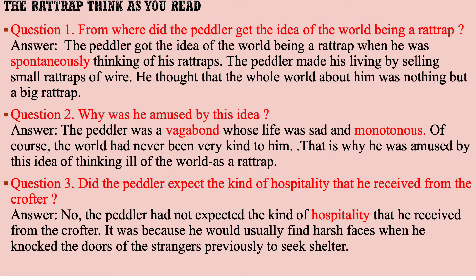Question number two: Why was he amused by this idea? Answer: The peddler was a vagabond whose life was sad and monotonous. The world had never been very kind to him. That's why he was amused by this idea of thinking ill of the world as a rat trap. Question number three: Did the peddler expect the kind of hospitality that he received from the crofter? No — the peddler had not expected that kind of hospitality.